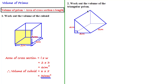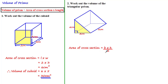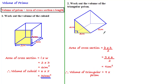Work out the volume of the triangular prism. We choose this triangular face as the cross-section, as it goes uniformly through the shape to the opposite parallel face. Since the cross-section is a right-angle triangle, we calculate the area using base times height over two: three times six divided by two equals nine centimeters squared. Multiplying by the length of eight gives a volume of 72 centimeters cubed.